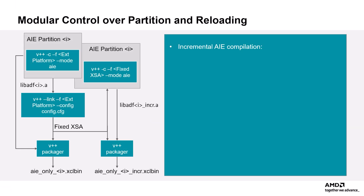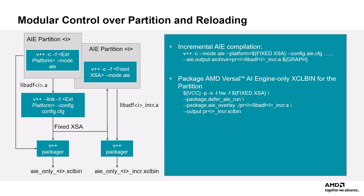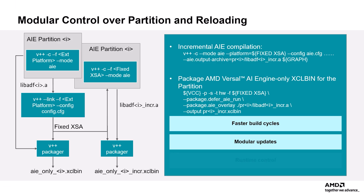With incremental AI Engine compilation, we only recompile the modified parts of a graph using AIE.outputArchive. This produces smaller, faster builds, ideal for iterative development. Each partition generates its own incremental archive, which is then packaged into an XCL bin using package.AIEoverlay. We still use package.deferAIErun, so runtime control is preserved. Incremental AI Engine compilation enables faster build cycles, modular updates, and preserves runtime control for efficient and flexible development.